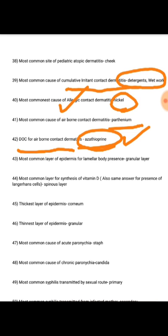Most common layer of epidermis for lamellar body presence is the granular layer. Most common layer for synthesis of vitamin D is the spinous layer, which also has the most Langerhans cells. Thickest layer of epidermis is stratum corneum; thinnest layer is the granular layer.